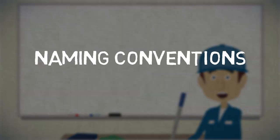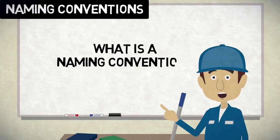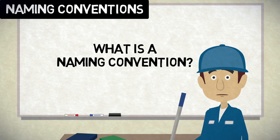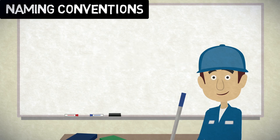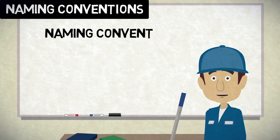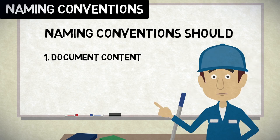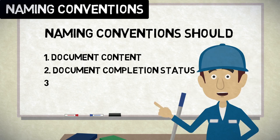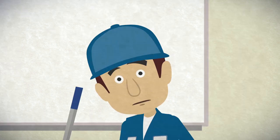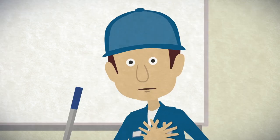What is a naming convention? A naming convention is a consistent method for creating file names for your electronic records. Its purpose is to determine: 1. The document's subject, 2. Its status, 3. Whether it is a record, such as a final document. That is a lot of information — a standard naming convention is worth the effort.